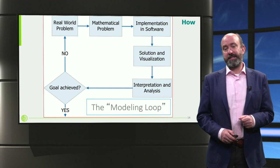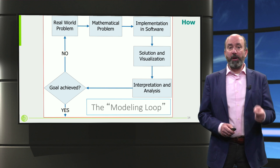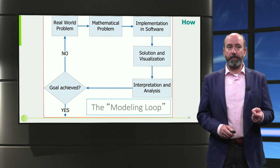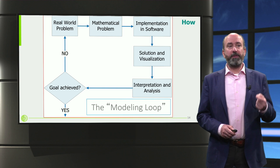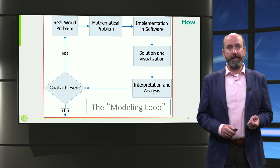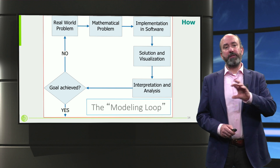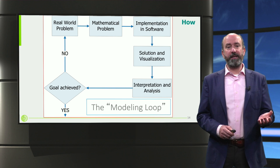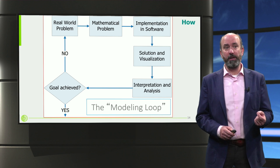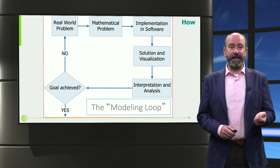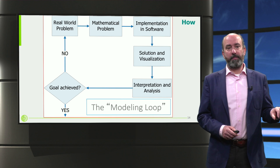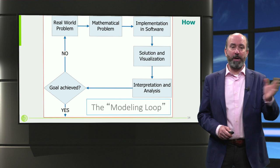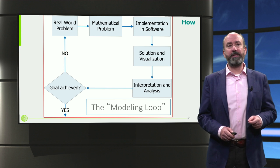With respect to the 'how' question, the modelling effort is usually an iterative one. You see here an example of what we call the modelling loop. First, in the top left, you have a real-world problem that helps you define requirements, from which you develop a mathematical model that you implement into software. You run simulations, obtain a solution, and use visual tools to interpret and analyse the results to solve the problem. Very often, one iteration is not enough and you have to go back and improve your model.